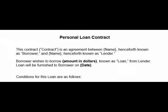Sometimes our friends or relatives need money and borrow it from us. In both situations, we should make a contract. This kind of contract is known as a personal loan contract.